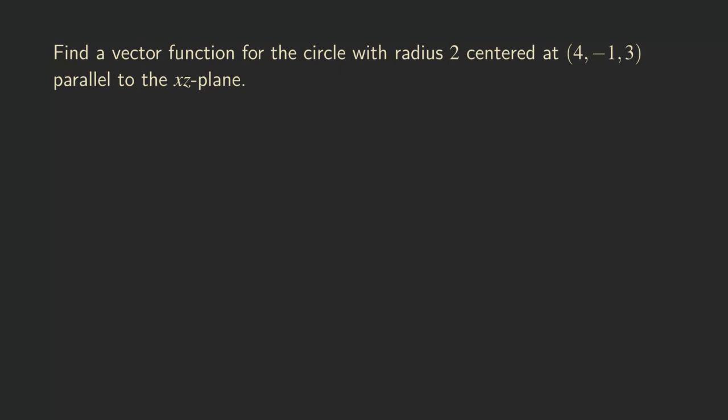What does it mean for the circle to be parallel to the xz plane? We're actually really just saying that it lies in the plane that's parallel to the xz plane. So how do we find this plane that's parallel to the xz plane that the circle lies in? We can look at the y value for the center of the circle because this y value tells you what plane that the circle lies in.